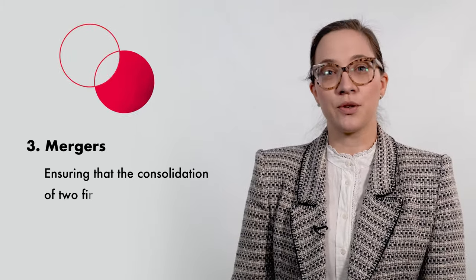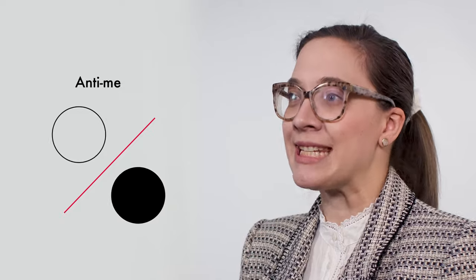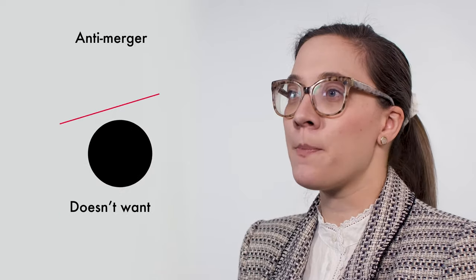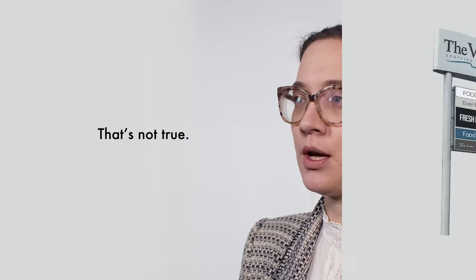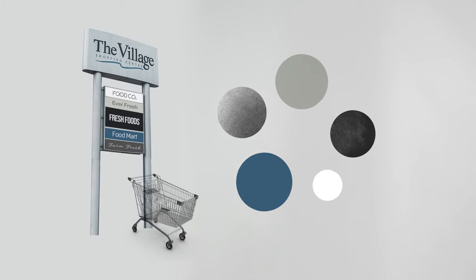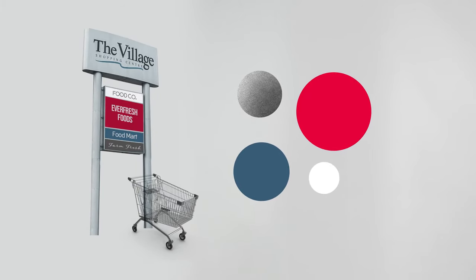The third area is mergers, which is ensuring that the consolidation of two firms won't eliminate competition in that sector. One misconception of competition policy is that it's anti-merger and doesn't want businesses to get too big. That's not true. For example, if there are five major grocery store chains operating in the market and two of them merge, there are still three other options for consumers.